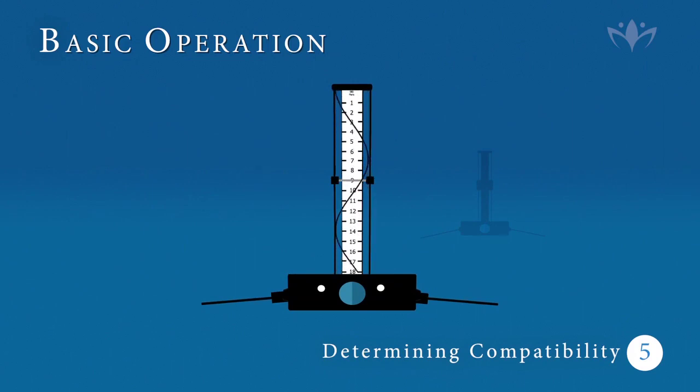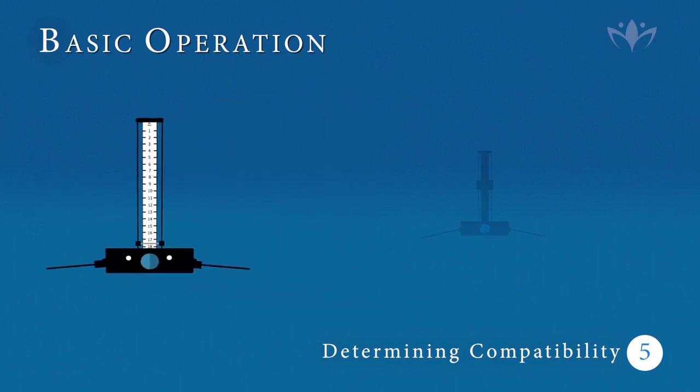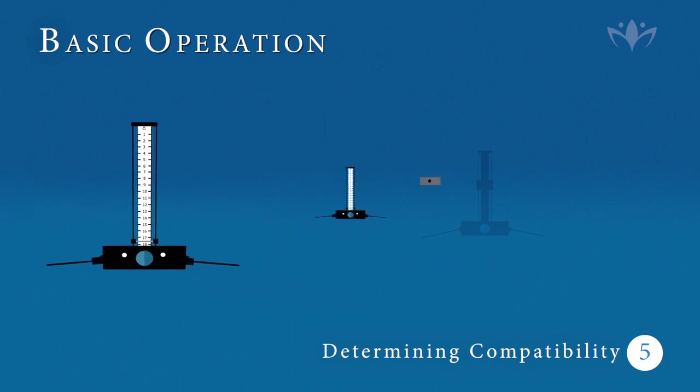And finally, five, determining whether a product will resonate with or is good for your patient. Set the shorting bar to 17.6 and then connect the conductive mask to the right hole as shown and have your patient hold the mask in their dominant hand with legs uncrossed while you check the product. If a positive response occurs, the product will be beneficial to the health of that patient.